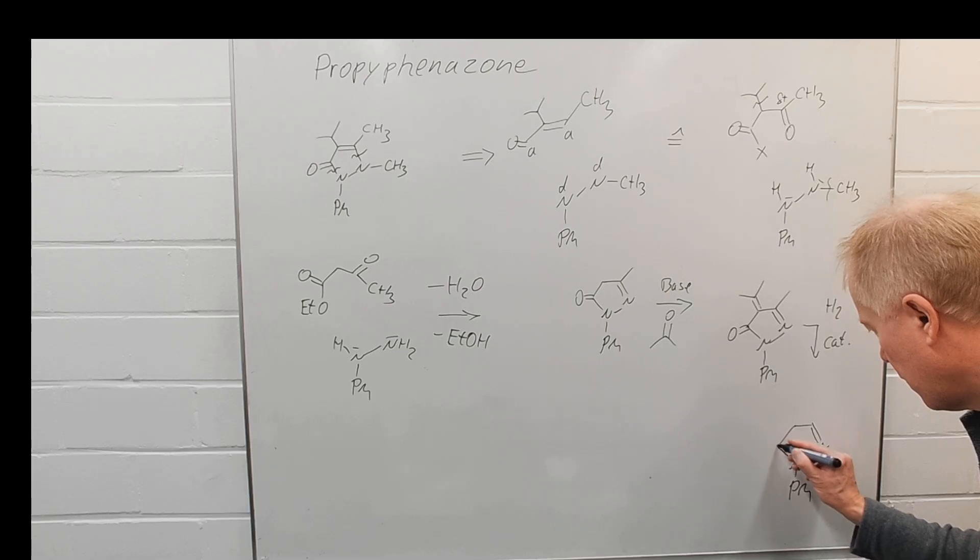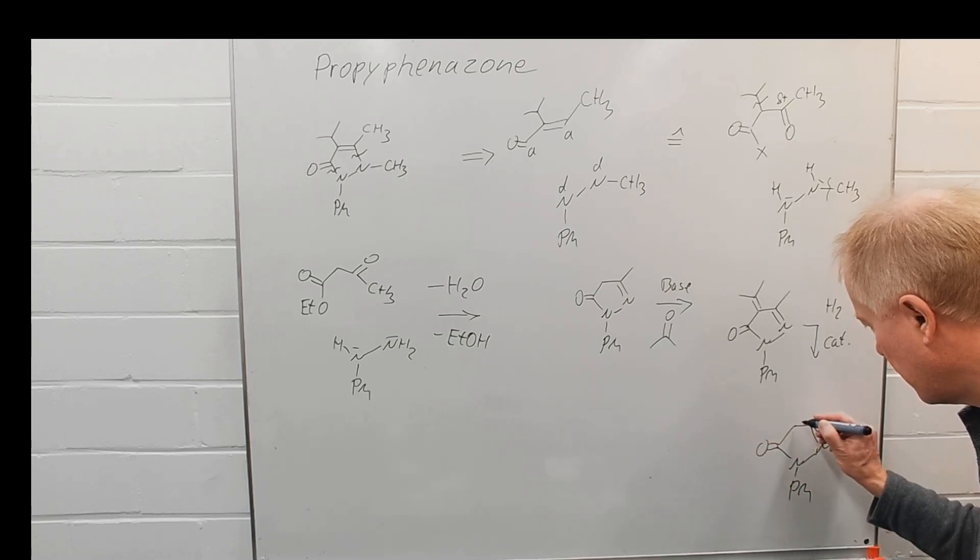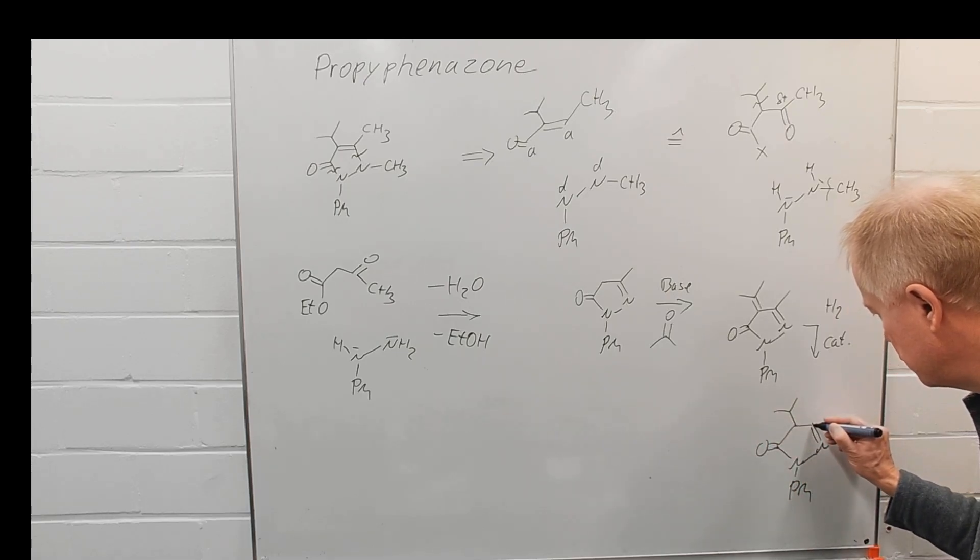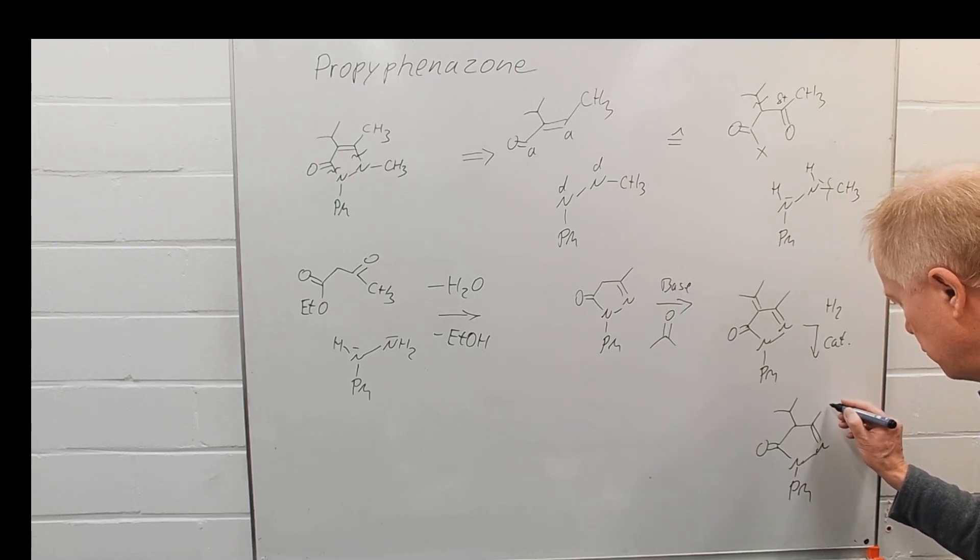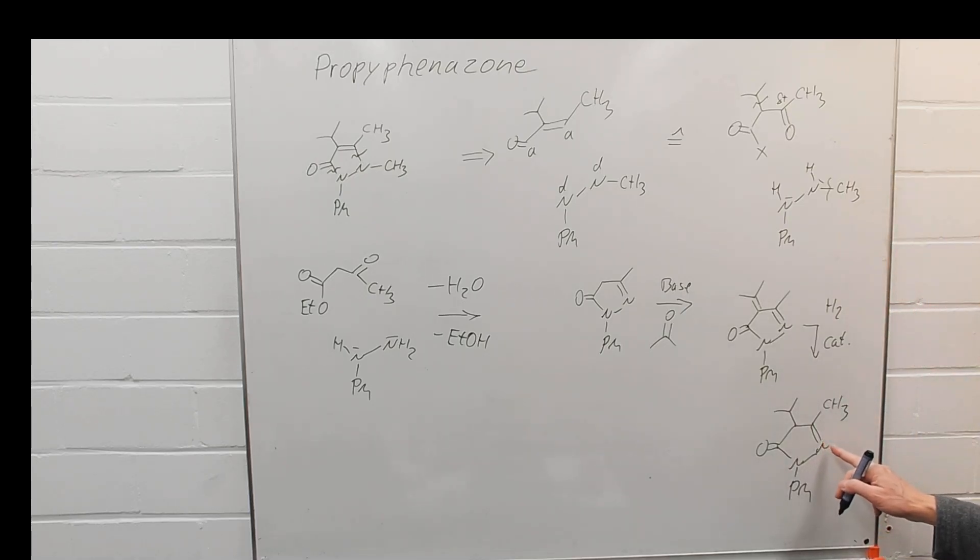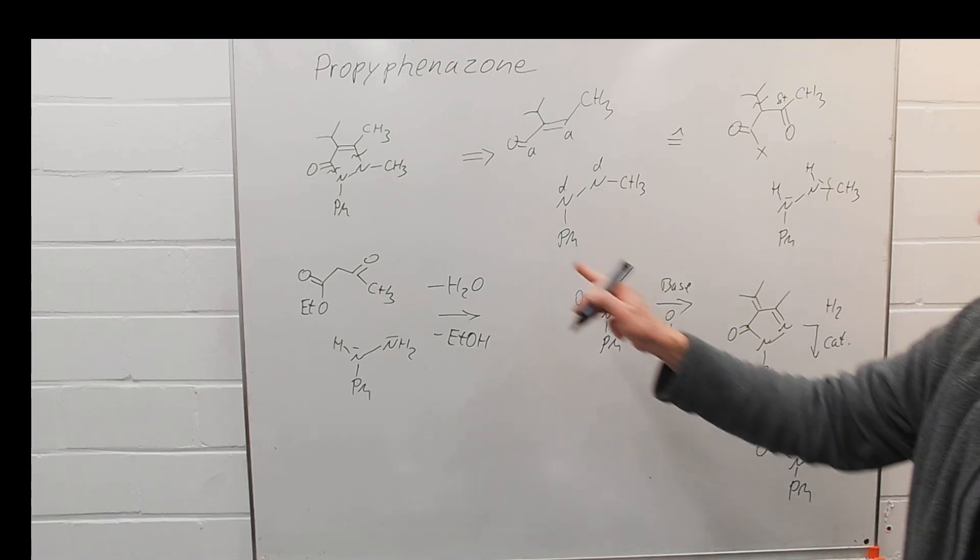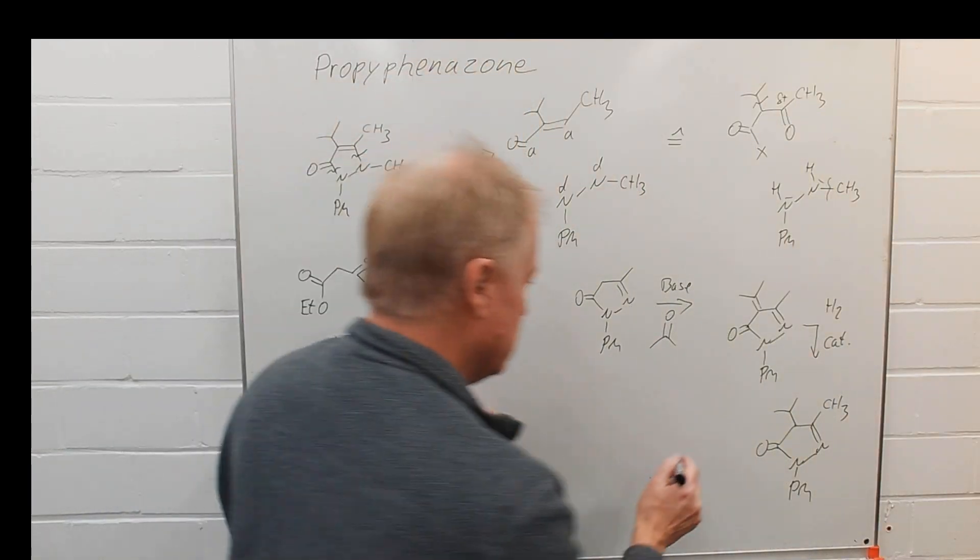Then we already have the isopropyl group at the correct position. What about the methylation we need to achieve at that nitrogen?